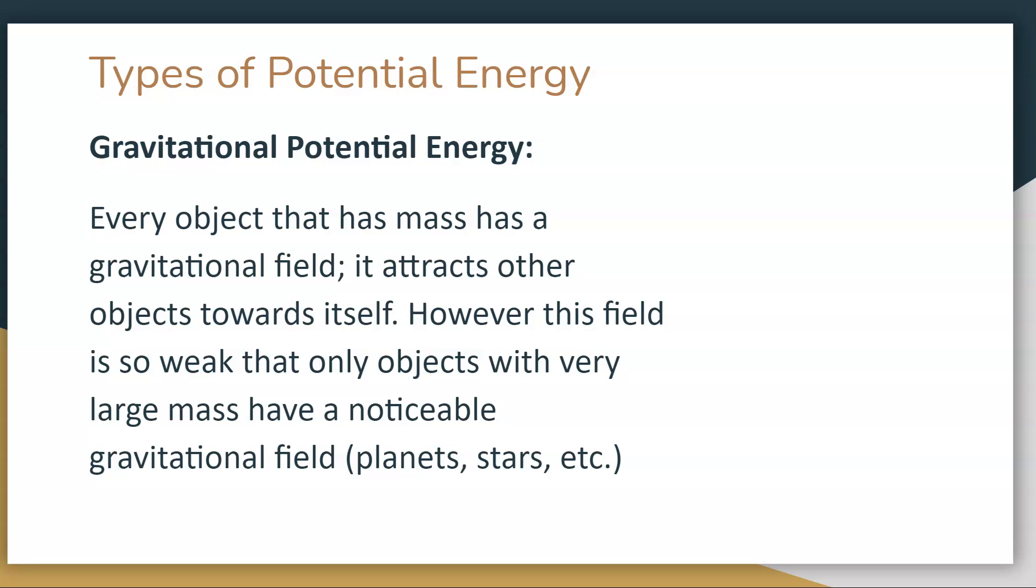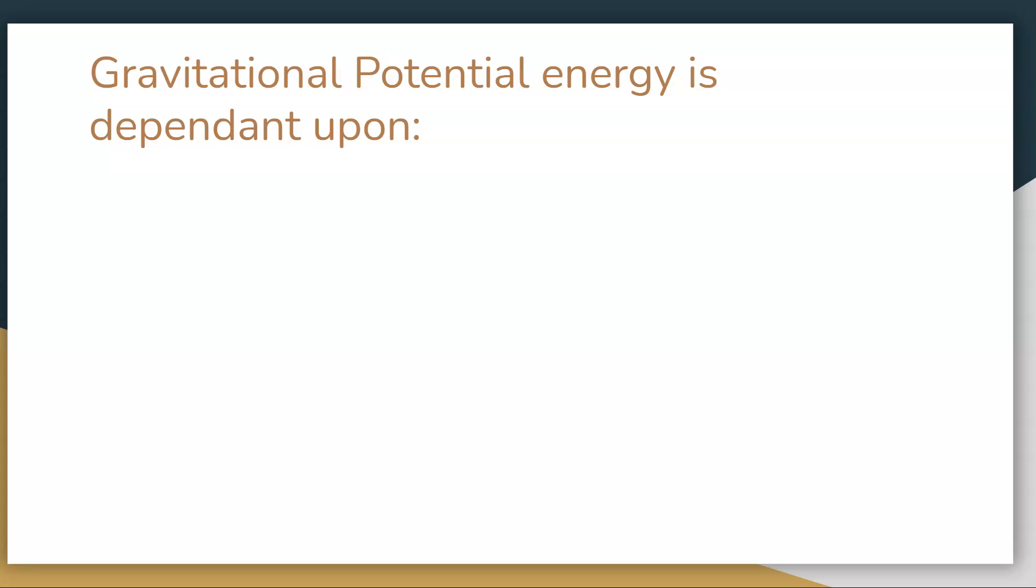Gravitational potential energy is talking about the gravitational field that we all have. Every object that has a mass has some sort of gravitational field and attracts other objects towards itself. For us and the things here on Earth, it's so weak that we don't notice it. Only objects with large masses have noticeable gravitational fields, things like planets and stars.